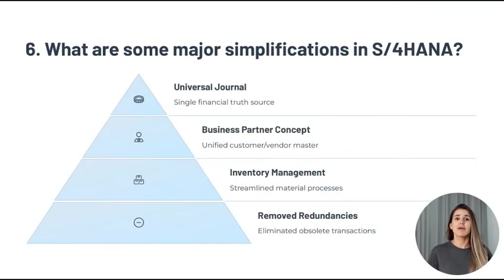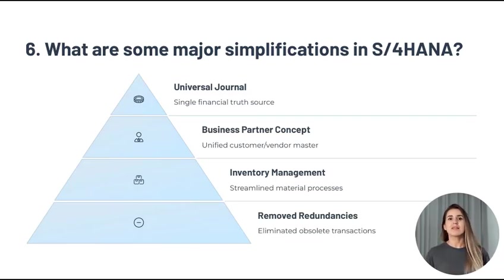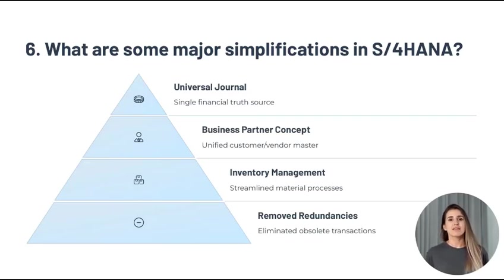Question 6: What are some major simplifications in S4 HANA? Key simplifications include the replacement of traditional tables like BSIS and BSAS with the Universal Journal, removal of redundant transactions, the merged business partner concept combining customer and vendor master, and streamlined inventory and material ledger processes.